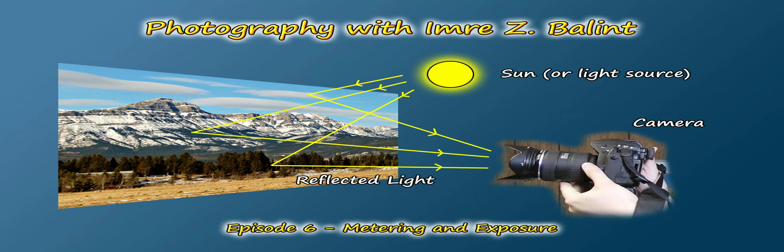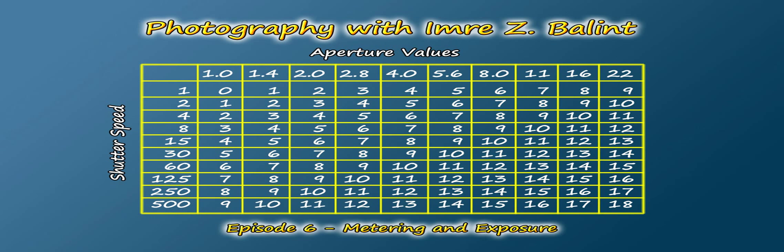Let's start with how the vast majority of digital cameras measure light. Cameras have a built-in light meter that measures the light reflected off of the environment you're shooting. That would include things like your subject, the sky, the ground, and whatever else is in your scene.